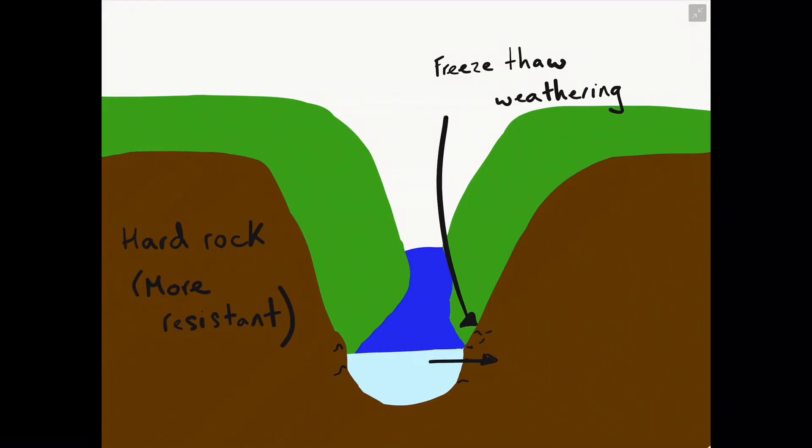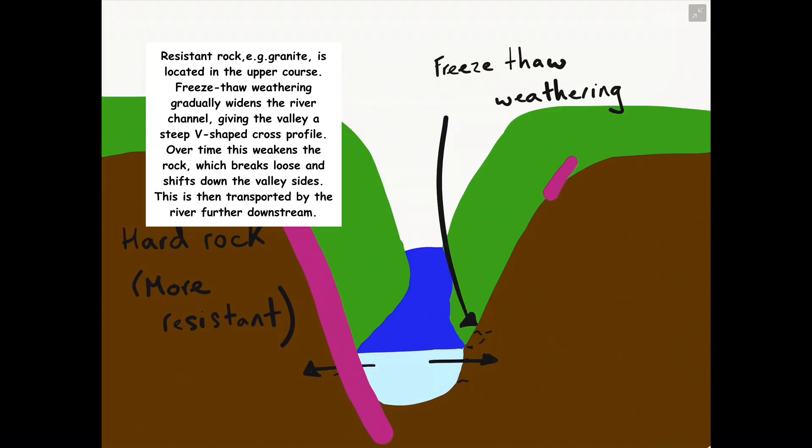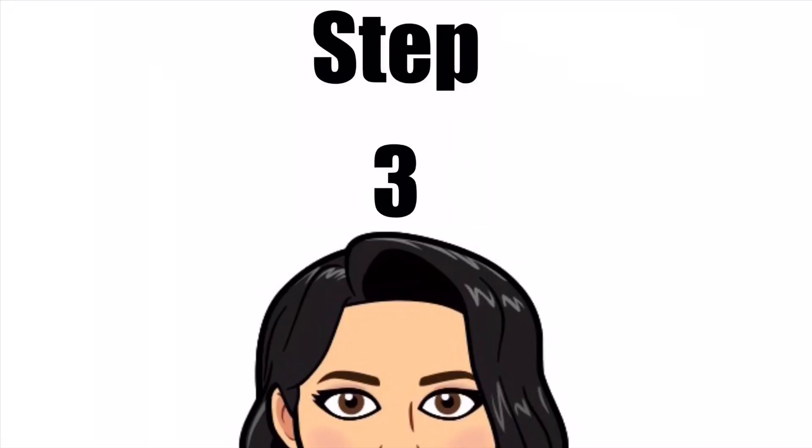Over time, this process continues to weaken the rock in the upper course of the river valley, which breaks loose more material. That material then shifts down the valley sides into the river. The river then transports this material further downstream.